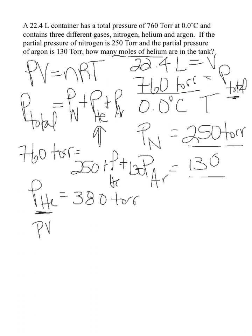So PV equals nRT – we want to solve for n – so PV divided by RT equals n. The pressure of the helium is 380 torr. The volume is 22.4 liters.